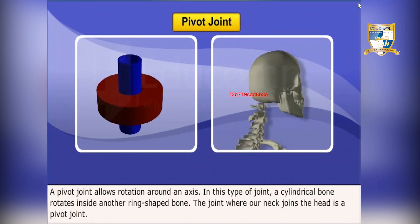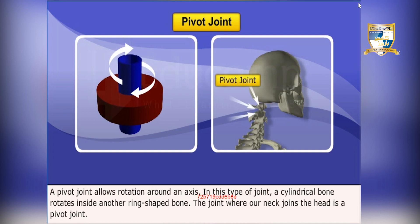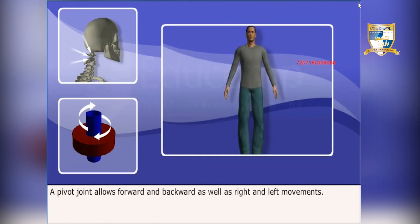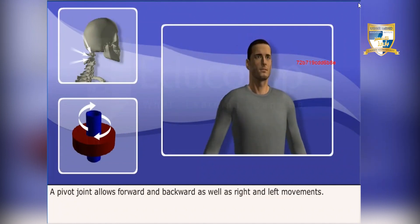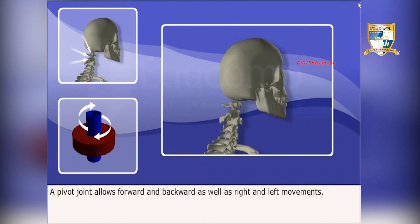A pivot joint allows rotation around an axis. In this type of joint, a cylindrical bone rotates inside another ring-shaped bone. The joint where our neck joins the head is a pivot joint, and it allows forward and backward as well as right and left movements.